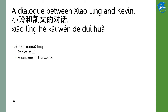Let's look at the whole sentence: 小林和凯文的对话. 小林, as I said, is a name, and 凯文 is Kevin. You have learned the individual words before — 凯文, as in 凯特, which is the Chinese translation of Kate. And 文, as in English, you say 英文, so that's the same word. And 对话 means dialogue. So 小林和凯文的对话 means Xiaolin's and Kevin's dialogue.